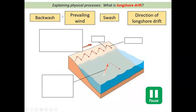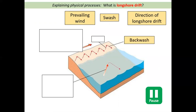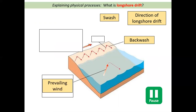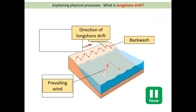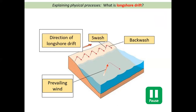Let's have a little practice. There are four key terms and four boxes — pause the video and try to work out which box matches which description. The backwash is the wave coming off the beach, always in a straight line. The prevailing wind is the direction the wind normally blows from — it's what causes the waves. The swash is the wave coming onto the beach at an angle. Therefore the direction of longshore drift on this beach is moving in this direction — sand over here will end up over there.